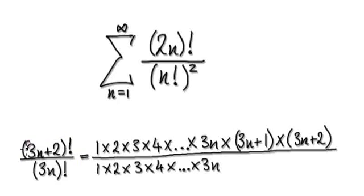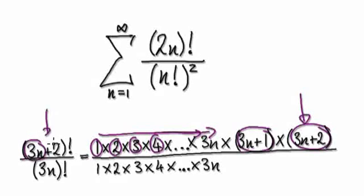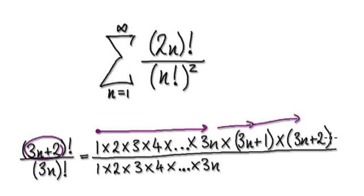Well, factorial from 1 all the way to 3n+2 means 1 times 2 times 3 times 4 and so on, all the way up to 3n, and then the next term will be 3n+1, and then the one after that will be 3n+2. So 3n+2 factorial actually means this: from 1 all the way to 3n, then 3n+1, then 3n+2.